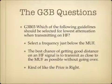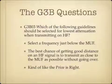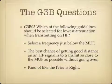Which guideline should be selected for lowest attenuation when transmitting on HF? You want to select a frequency just below the maximum usable frequency. The best chance of getting good distance on an HF signal is to transmit as close to the maximum usable frequency as possible without going over — kind of like the Price is Right. That will give you the best chance of getting good propagation on an HF signal.